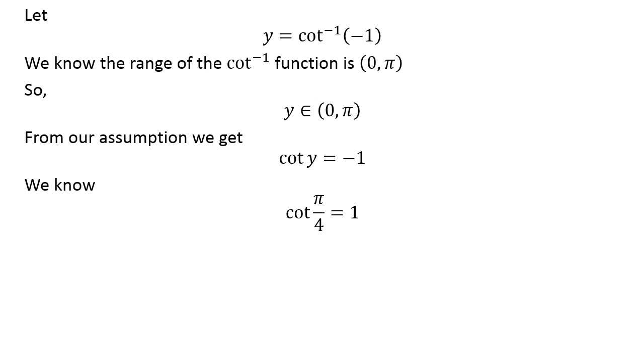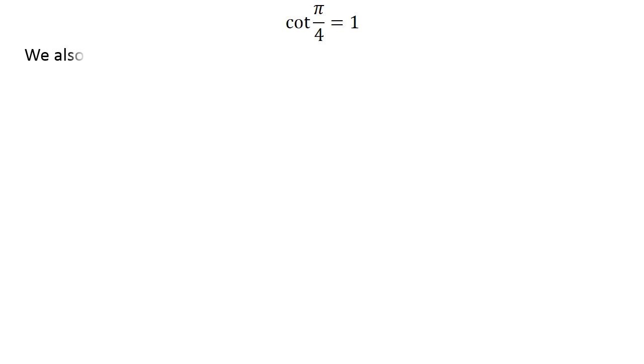We know cotangent of pi upon 4 is equal to 1. We also know the trigonometry identity cotangent of pi minus x is equal to minus cotangent of x. The verification of the identity has been explained in the video appearing in the upper right corner. The link of the video is also mentioned in the description section.